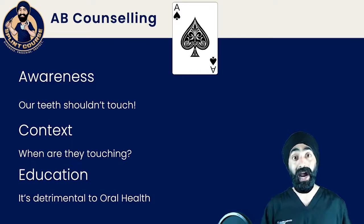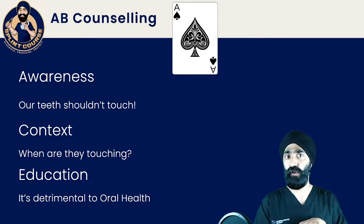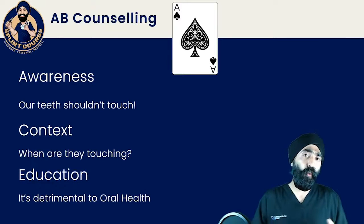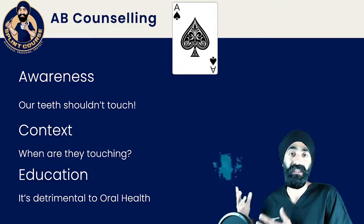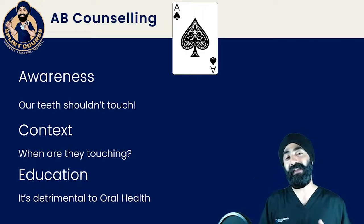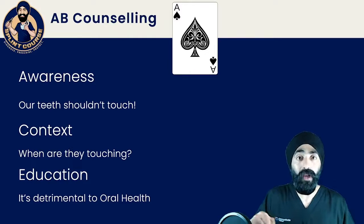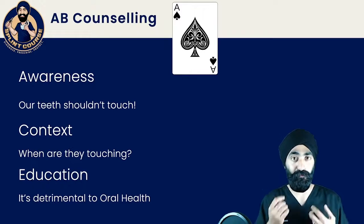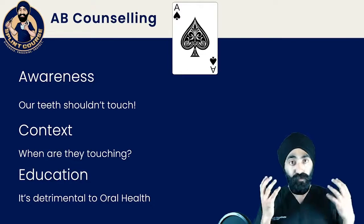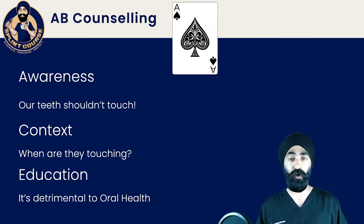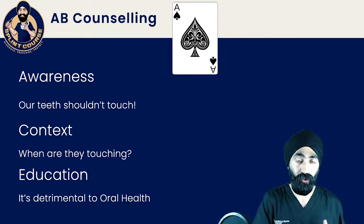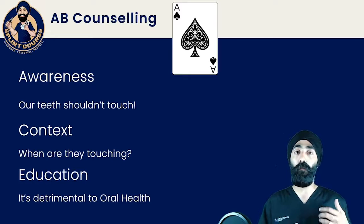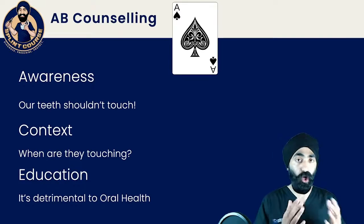The type of counseling I would advise before considering an appliance is ACE: Awareness, Context, and Education. Awareness means our teeth shouldn't touch — did you know that? Lips together, teeth apart. When a patient reports, 'Yes, I do tap my teeth together,' the next stage is Context — I do it when I'm ironing, or I drive, or for me, when I'm drilling cavities, my mandible is thrusted forward and I'm lightly clenching. Then it's about Education: explain that it's detrimental to their oral health — excessive muscle stimulation, more likely to cause cracks and wear on their teeth. Once they internalize that, hopefully through counseling they can stop themselves.